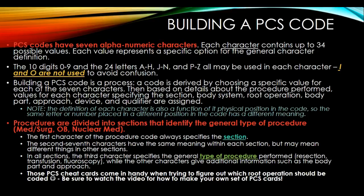The 10 digits 0 through 9 and the 24 letters A through H, J through N, and P through Z may all be used in each character. Make sure that you are aware that the letters I and O are not used when building PCS codes, so that we can avoid confusion with the numbers 1 and 0.